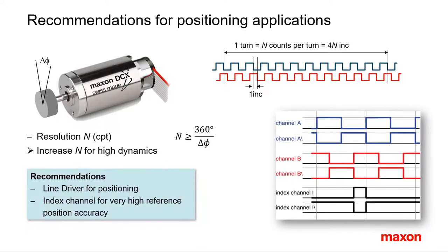Further recommendations. Whenever possible, use an encoder with line driver for positioning. This differential signal transmission avoids pulse losses and gives you a better signal, in particular over longer distances.